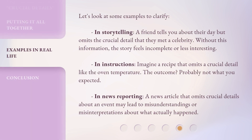Let's look at some examples to clarify. In storytelling, a friend tells you about their day but omits the crucial detail that they met a celebrity — without this information, the story feels incomplete or less interesting. In instructions, imagine a recipe that omits a crucial detail like the oven temperature — the outcome is probably not what you expected. In news reporting, an article that omits crucial details about an event may lead to misunderstandings or misinterpretations about what actually happened.